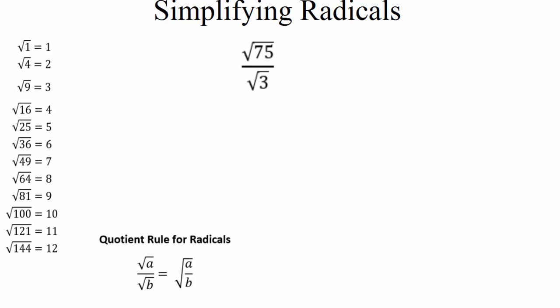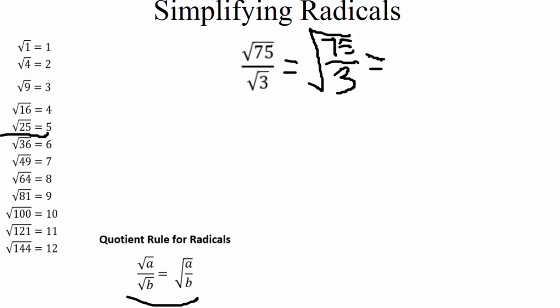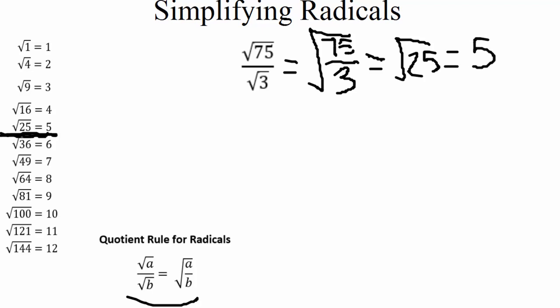For the square root of 75 over the square root of 3: 75 divided by 3 is divisible, and smaller numbers are easier to work with. Using the quotient rule, I put this under one big radical — the square root of 75 divided by 3. That gives us the square root of 25, which is a perfect square. The square root of 25 is 5. Problem done.